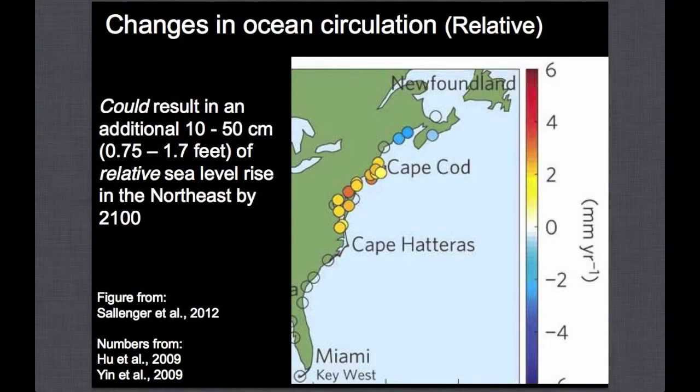What we do want to think about is changes in circulation patterns within the ocean. Everybody thinks sea level is flat, but sea level actually has some topography—it's a little higher relative to other spots within the ocean, largely driven by circulation and wind patterns. A paper by Asbury Sallenger, a USGS coastal geologist, published in June and July of this year, suggests that north of Cape Hatteras—in southern New England and the mid-Atlantic—we could be seeing an increase in the rate of relative sea level rise driven by changes in Gulf Stream circulation.